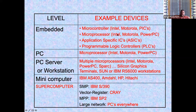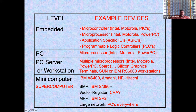Embedded systems include ASICs designed for specific tasks and programmable logic controllers — PLCs. Microprocessors are used for PCs, servers, and workstations, and typically in multiples for minicomputers. Examples include the AS400, and competitors like Amdahl and HP and Hitachi. The IBM S390 is listed here because that's what I worked on, along with the Power Parallel SP2, which was Deep Blue — built specifically to play chess and beat Kasparov in 1993.